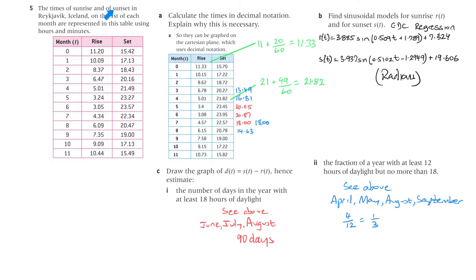Let's have a look number five. The times of sunrise and of sunset in Reykjavik, Iceland on the first of each month are represented in this table using hours and minutes. So that's 11 hours and 20 minutes. Now the first thing we've got, that's a rise, that's the set. Calculate the times in decimal notation, explain why this is necessary. This is from the back of the book. Makes sense. So they can be graphed on the Cartesian plane which uses decimal notation. So how do we get to 11.33? Well it's 11 hours plus 20 divided by 60 minutes and we get 11.33. Here's another example here, that's that one, 21.49. Well that's 21 plus 49 on 60 which is 21.82. So that's how we get that column and that column there.